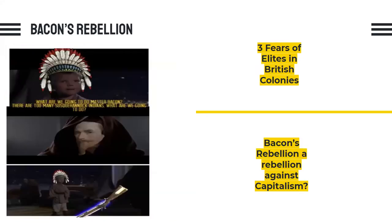There were three main fears that the elites had in the British colonies. One dealt with Native American hostility — they were worried about the Natives attacking back. The second was possible slave revolts. The third was this growing class of angry, poor white people. So they faced a potential three-front attack at any time. Their biggest fear was all three coming together. When Bacon's Rebellion broke out, that was kind of the sum of all their fears, because they saw all these people getting together against them.